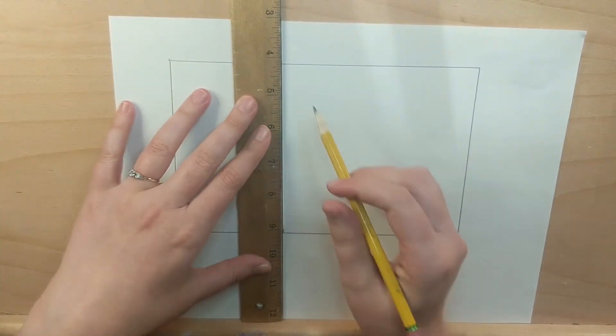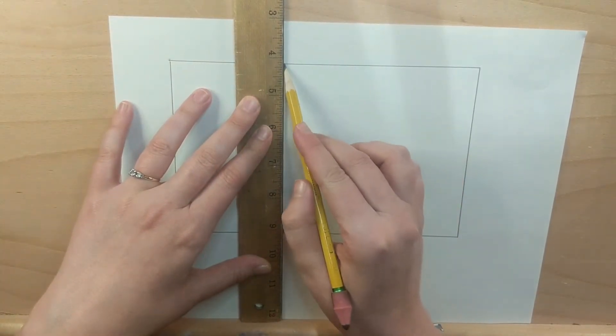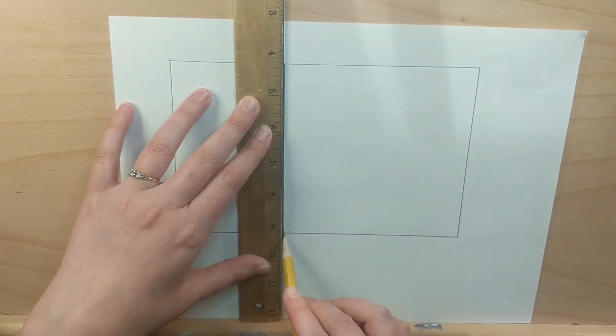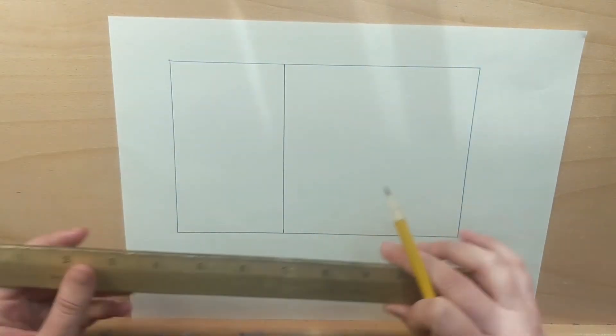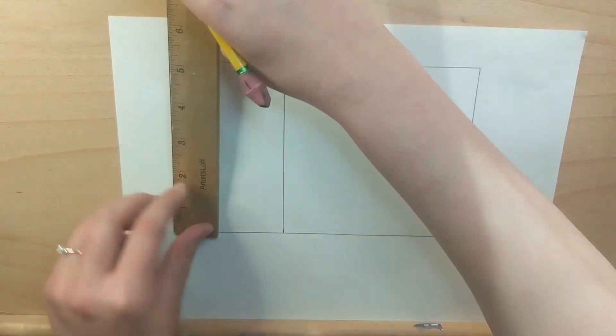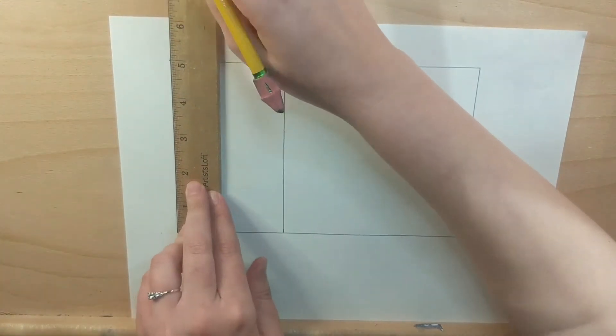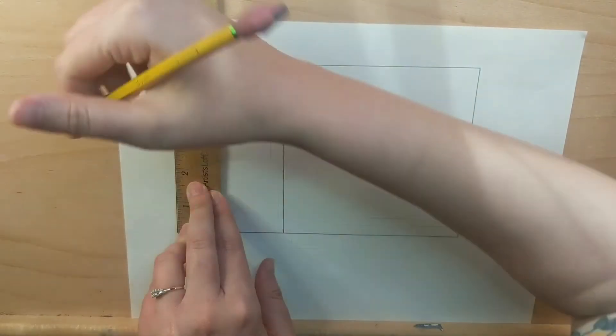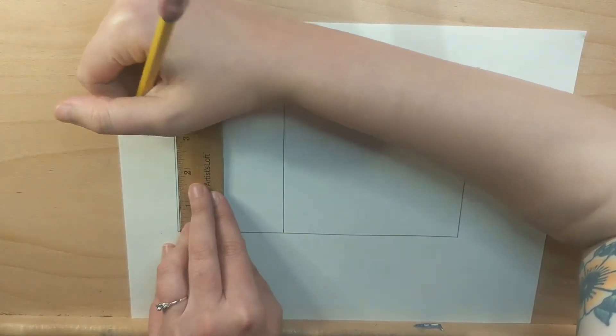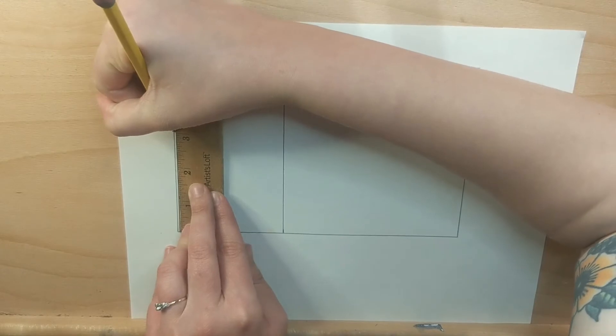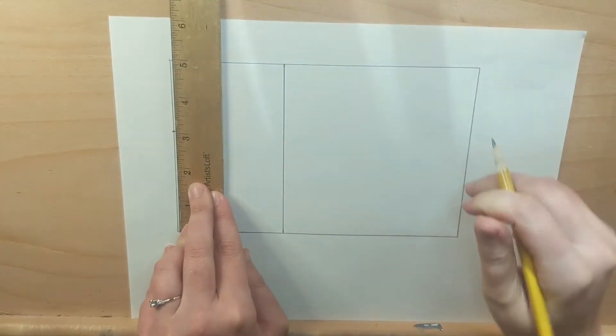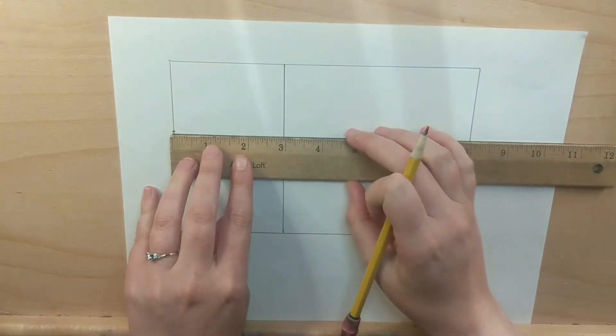So now I have a square and then a smaller rectangle next to it. Inside that smaller rectangle, I'm going to be creating a 3 inch square. So I'm going to go 3 inches up from the bottom, make a little mark with my pencil, and then use that mark to draw a line across to make a 3 inch by 3 inch square.